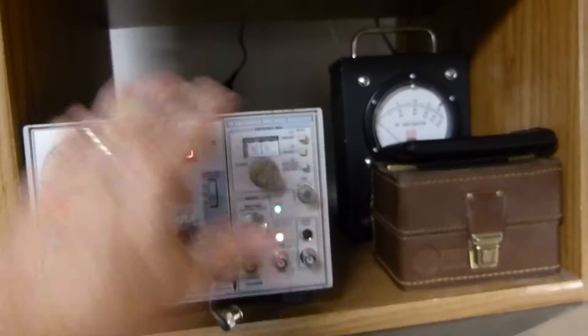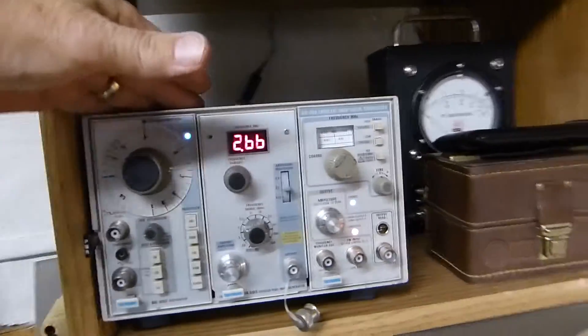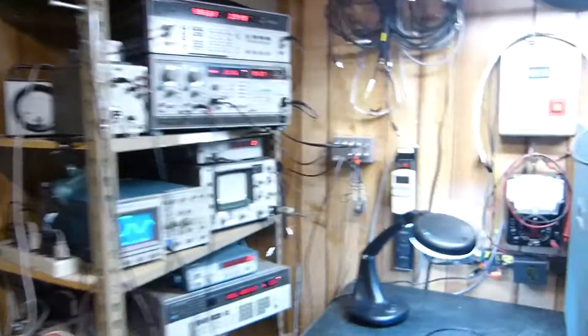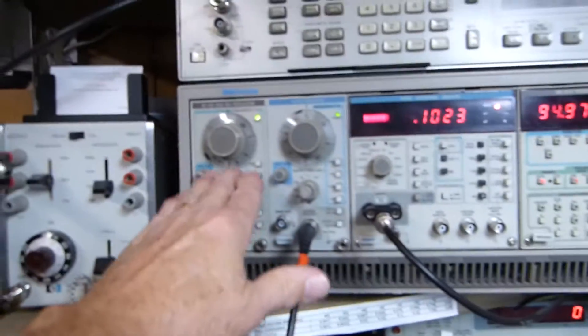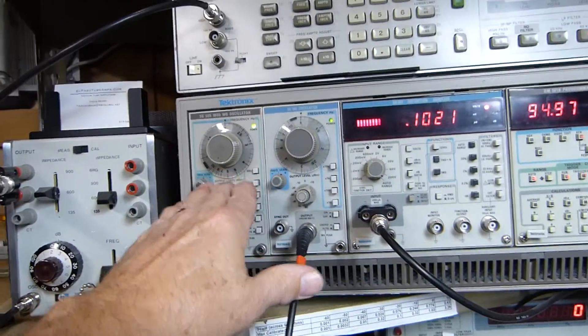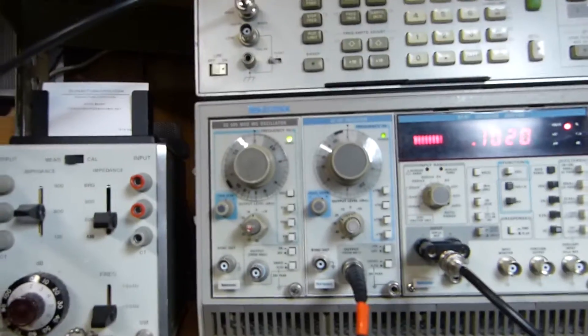This is my oscillator module, and this is my audio stuff. The SG 505 signal generators are some of their best ones. They have 8 parts per million and 0.0008% THD.